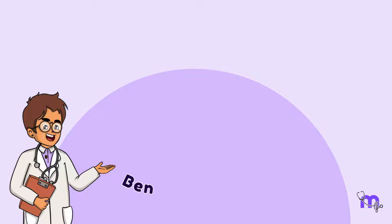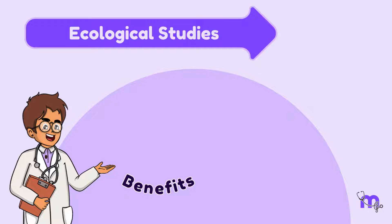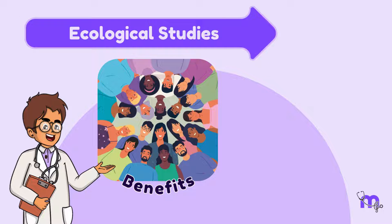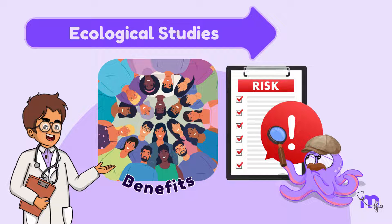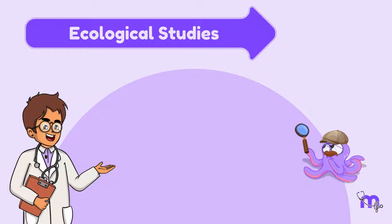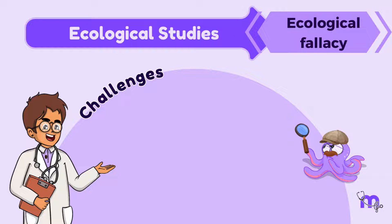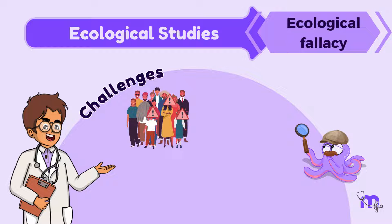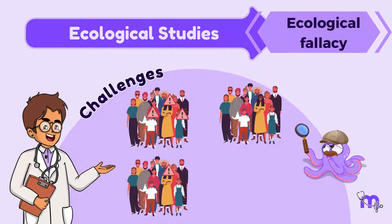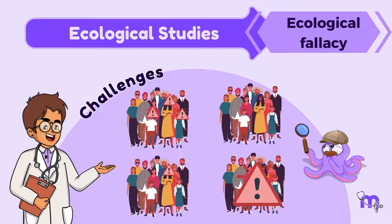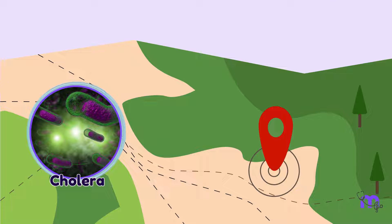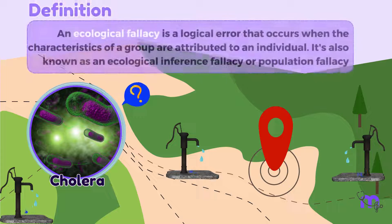The benefits of ecological studies include that a large number of people can be included, and a large number of risk-modifying factors can be examined. However, I also face challenges: the ecological fallacy could lead me to believe that apparent risk associations between various groups of people do not necessarily accurately reflect the true associations between individuals within those groups. For example, based on the cholera findings, I cannot generalize that the water pump causes cholera in other areas too.